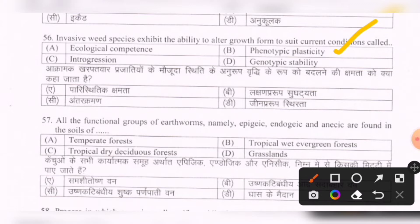Next question: All the functional groups of earthworms — namely epigeic, endogeic, and anecic — are found in the soils of which forest type? Options are: temperate forests, tropical wet evergreen forests, tropical dry deciduous forests, grasslands. For this question, some discrepancy was found, so marks will be given to all candidates.